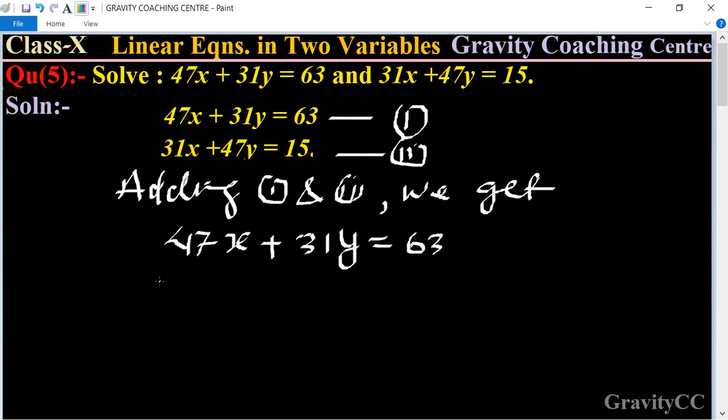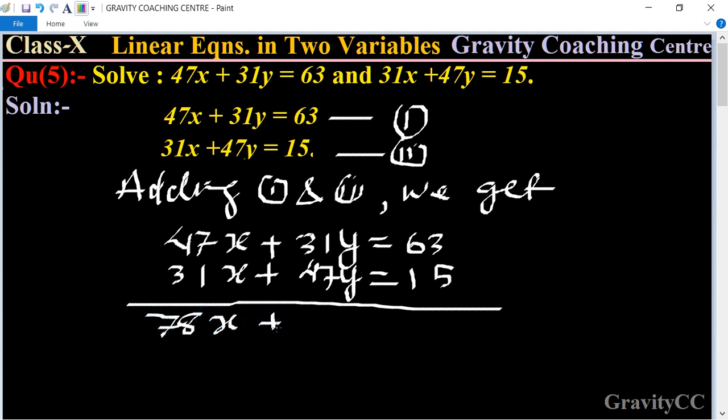After adding, we get 78x plus 78y equals 78. Now we take 78 as a common factor.